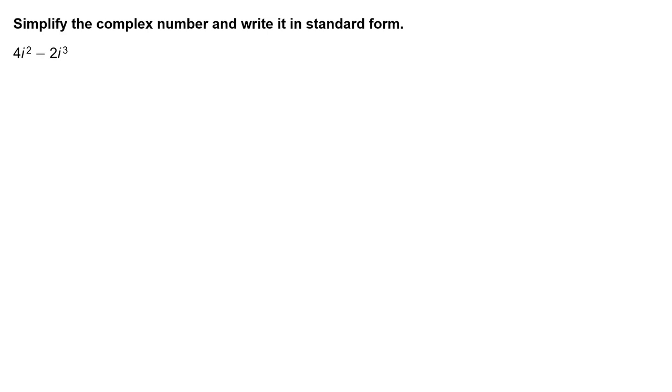Simplify the complex number and write it in standard form: 4i squared minus 2i cubed.